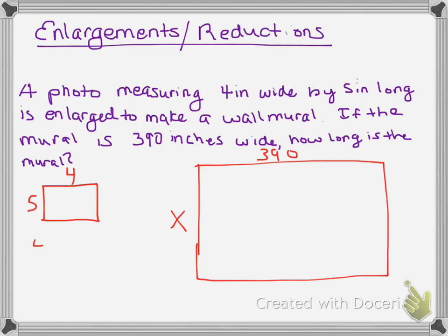We do this the same way. 4 over 390 equals 5 over X. 4X equals 390 times 5 is 950. Divide by 4. X equals 487.5 inches.